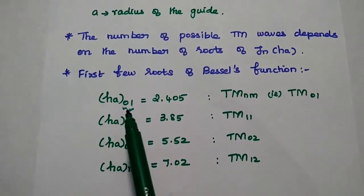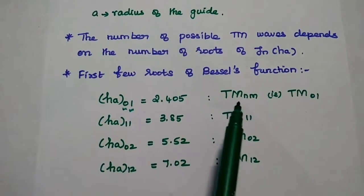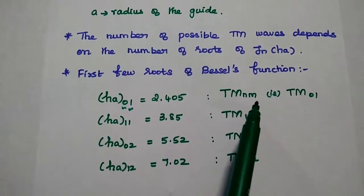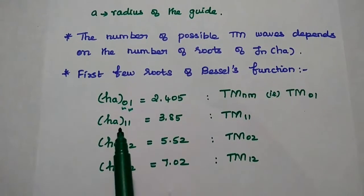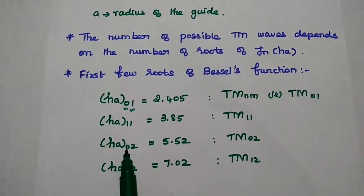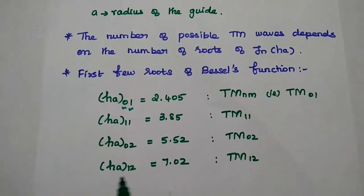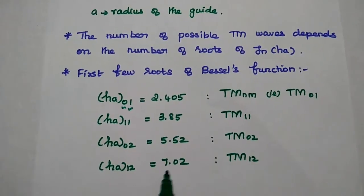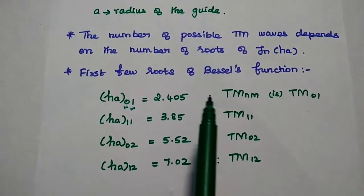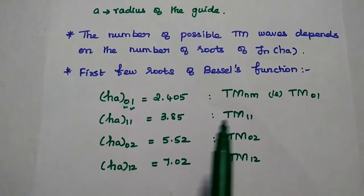The first few roots of Bessel functions are: HA of 01 is equal to 2.405, HA of 11 is equal to 3.85, HA of 02 is equal to 5.52, and HA of 12 is equal to 7.02. So if it is 01, then it is TEM01 mode; 11 means TEM11; 02 means TEM02; and 12 means TEM12. They are in ascending order.